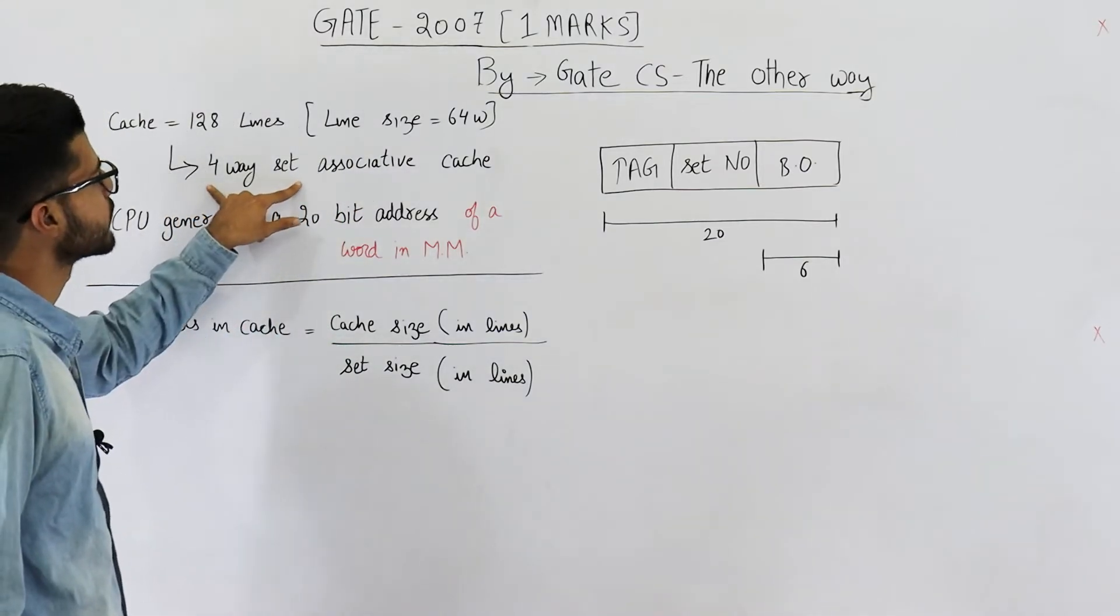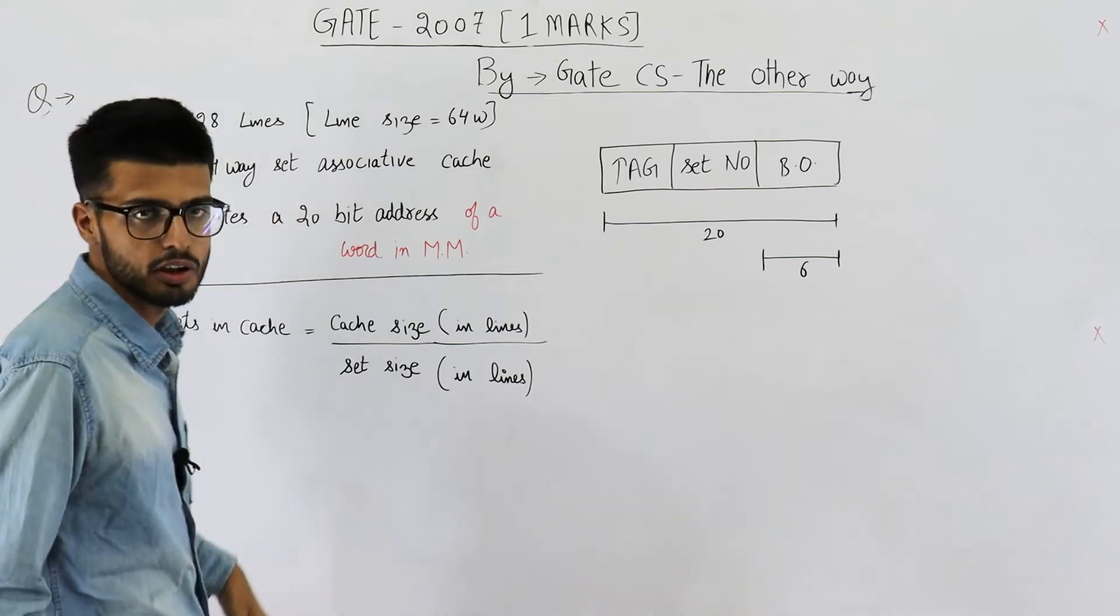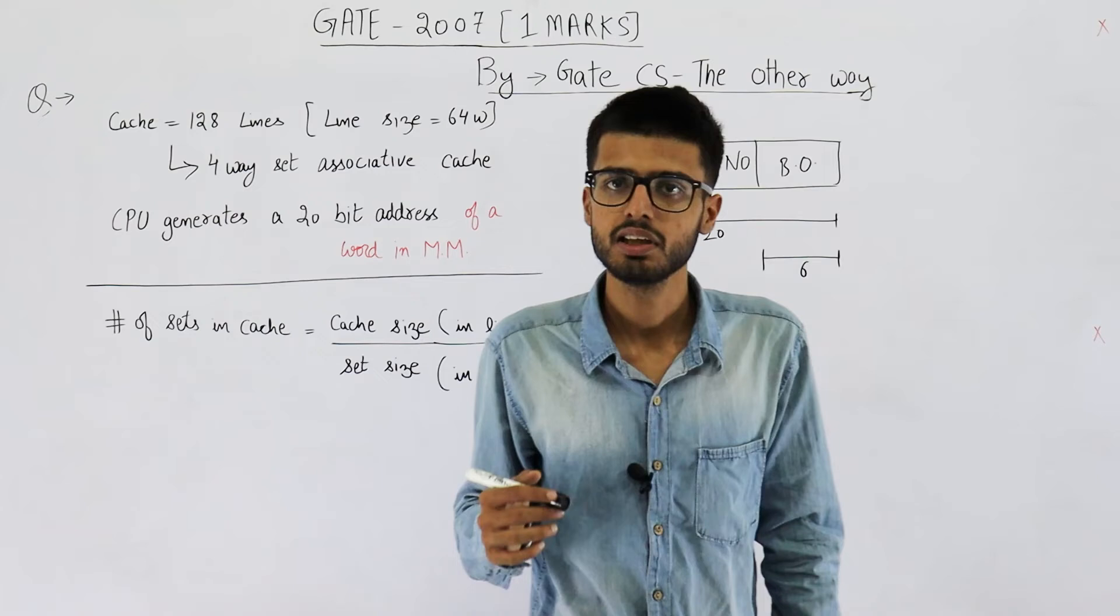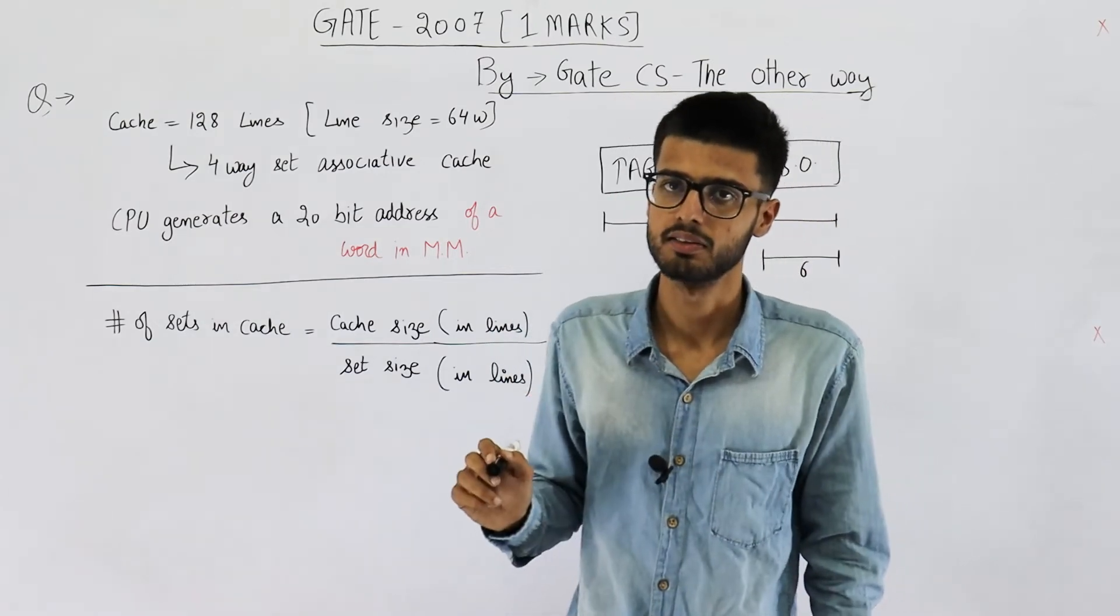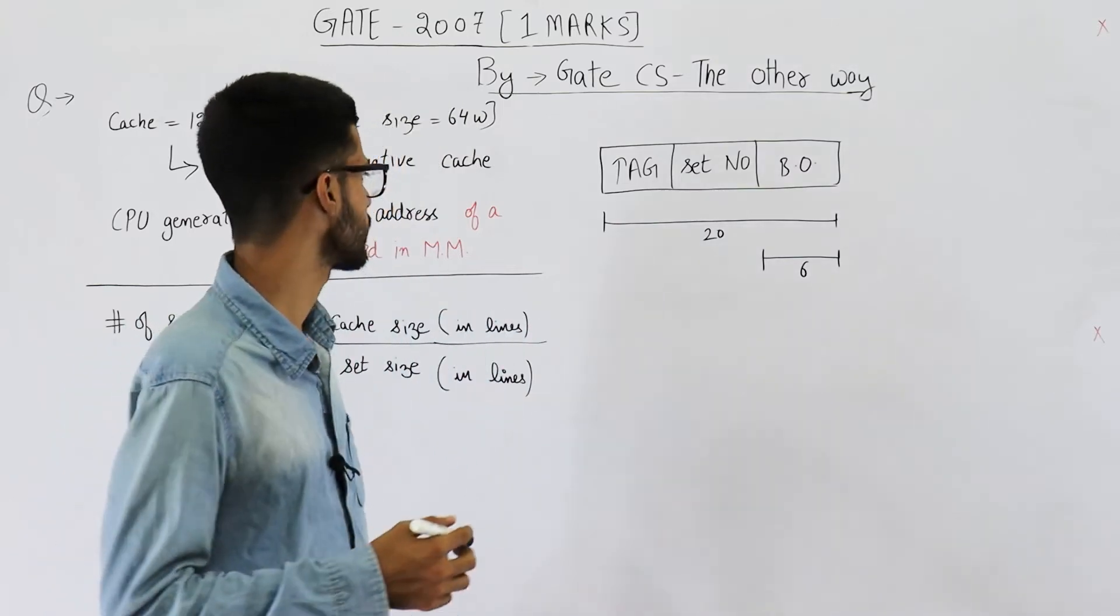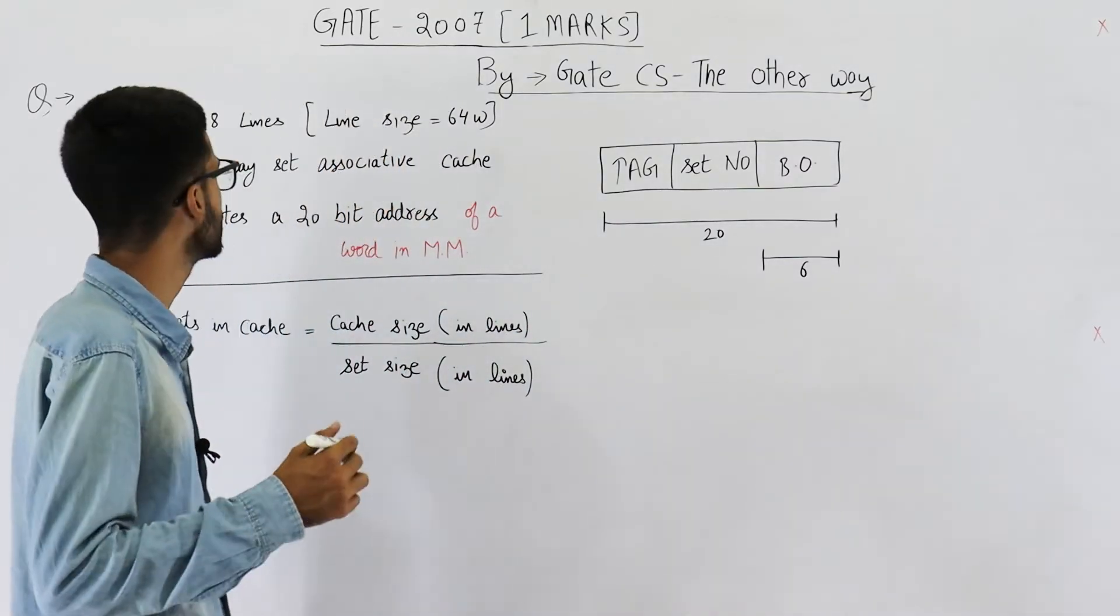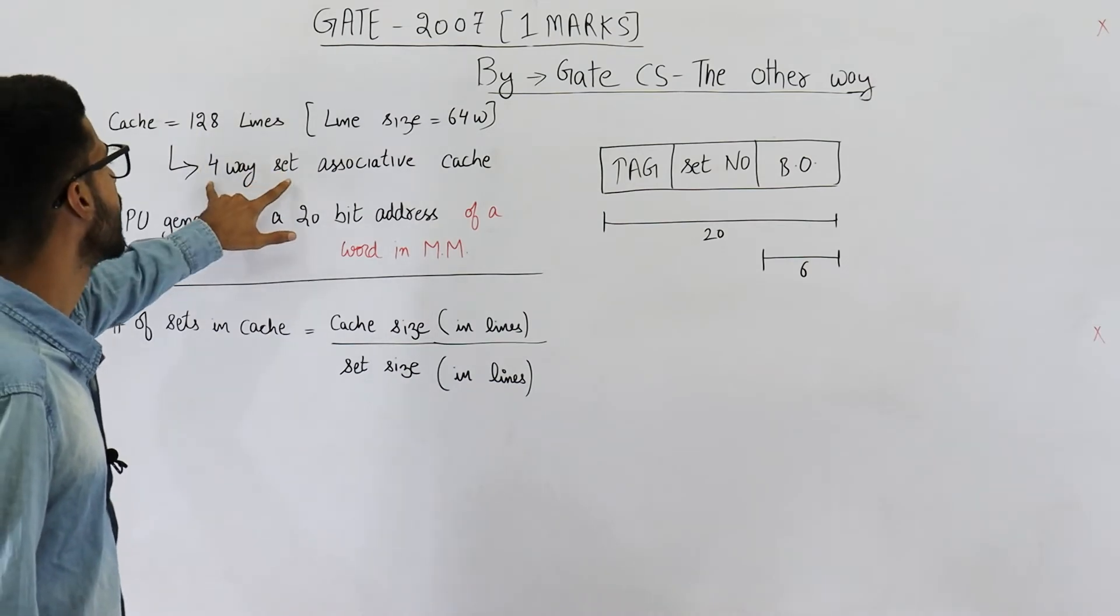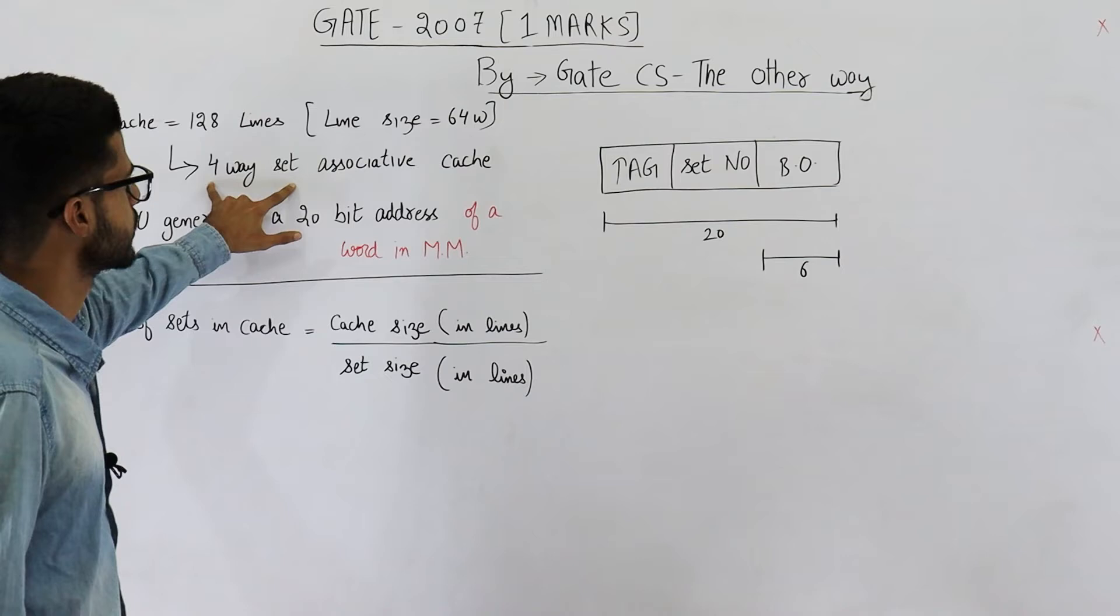Also this is a 4-way set associative cache. 4-way or k-way set associative cache means each set is going to have k lines. So in this case each set will be of 4 lines. Let's find out how many sets will be there. You have total 128 lines and it's 4-way set associative.